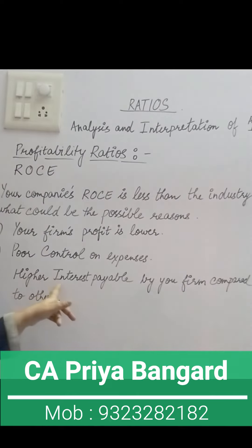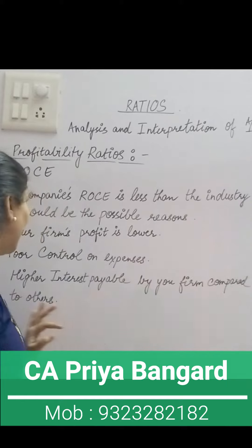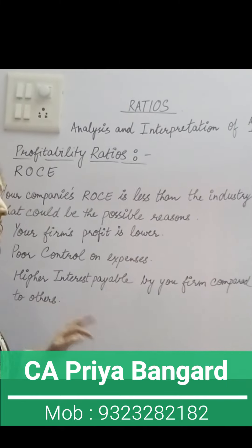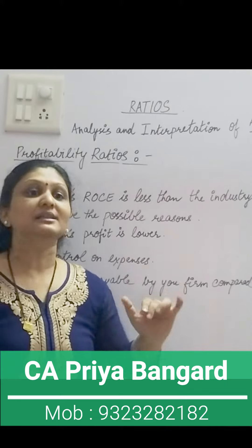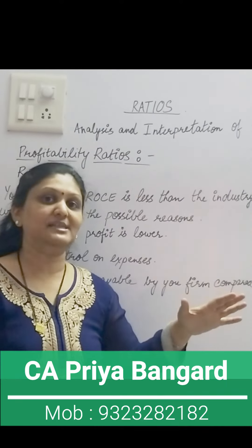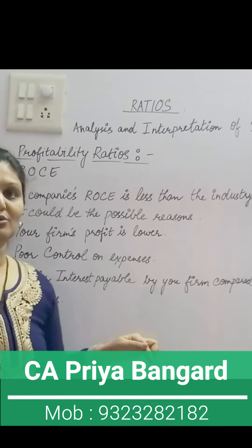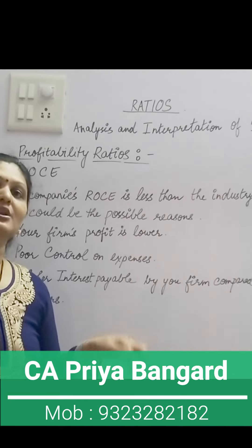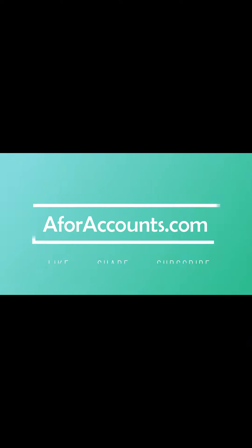The third point: higher interest payable by your firm compared to others. So if your interest burden is very high, then the net profit earned will go in interest. If your interest payable is high, then your ROCE will be lower than the other firms in the industry.